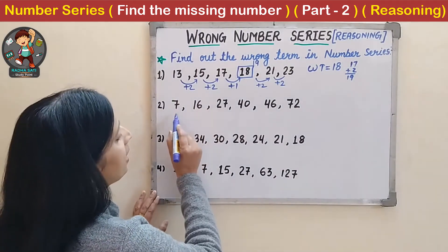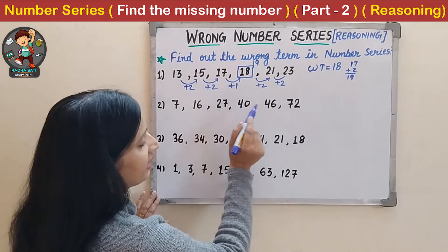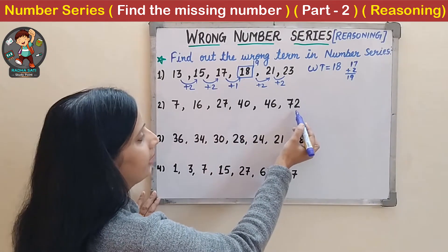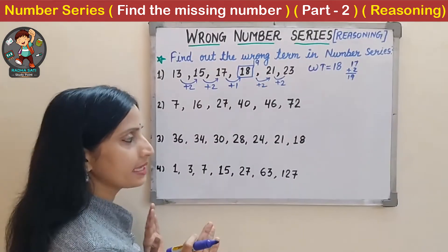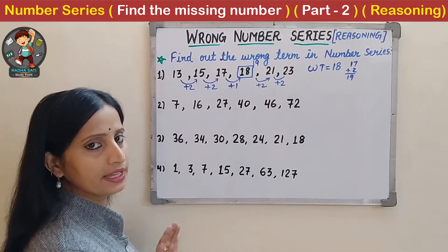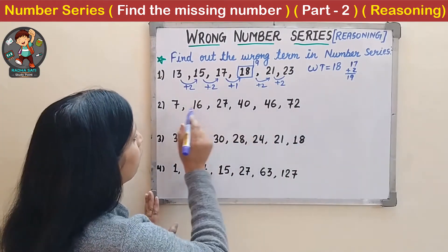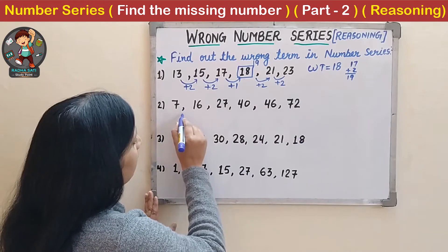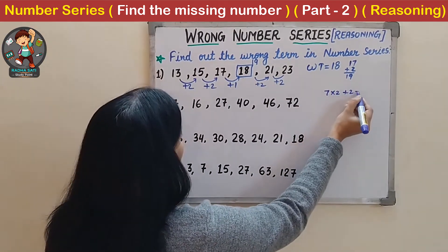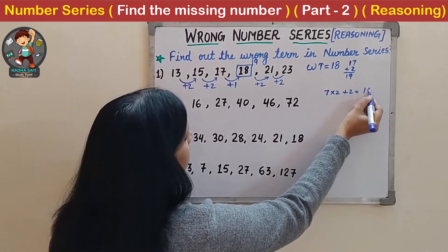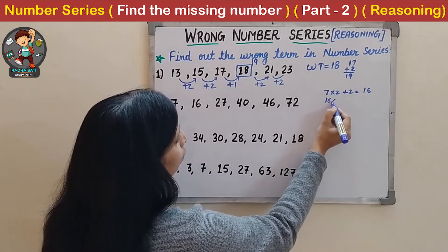Now the second question is 7, 16, 27, 40, 46 and 72. So it can be a multiplication-based series or addition-based series. Let us check for multiplication first. 7 multiplied by 2 plus 2 gives 16. But checking further we don't find a consistent multiplication pattern.